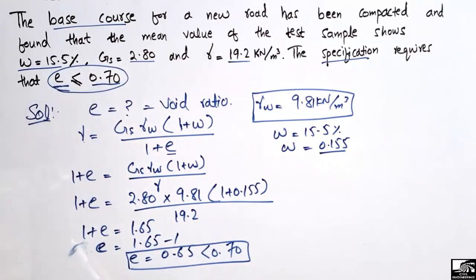The specification requires that the void ratio should be less than or equal to 0.70 and we found out that our soil has a void ratio of 0.65, which is less than 0.70, so it means we are within the limit.